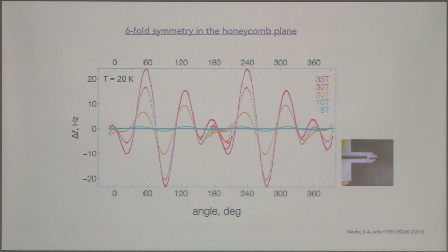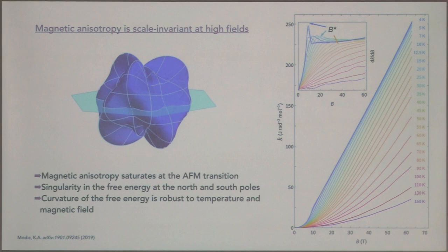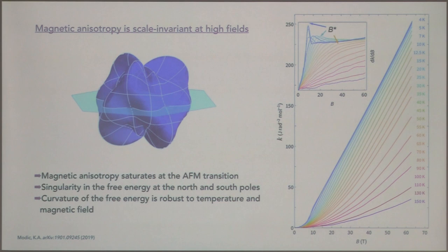We can do measurements in different directions and confirm we see the symmetries we expect. For example, an in-plane measurement shows six-fold rotational symmetry, which we expect because you have the three-fold symmetry of the lattice combined with two-fold time reversal symmetry. A schematic representation preserving all observed symmetries has a kind of singularity on the north and south poles — when field is aligned along the C axis — six-fold symmetry in the plane, and three-fold symmetry from the lattice as you move away from in-plane. Importantly, when you change temperature or magnetic field, the shape of this free energy surface is very robust — it doesn't change.